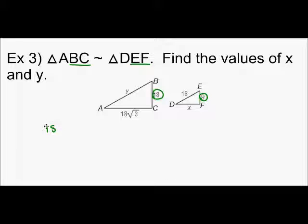18 over 9 simplifies to 2 over 1. I want to find X first. So, X is DF.